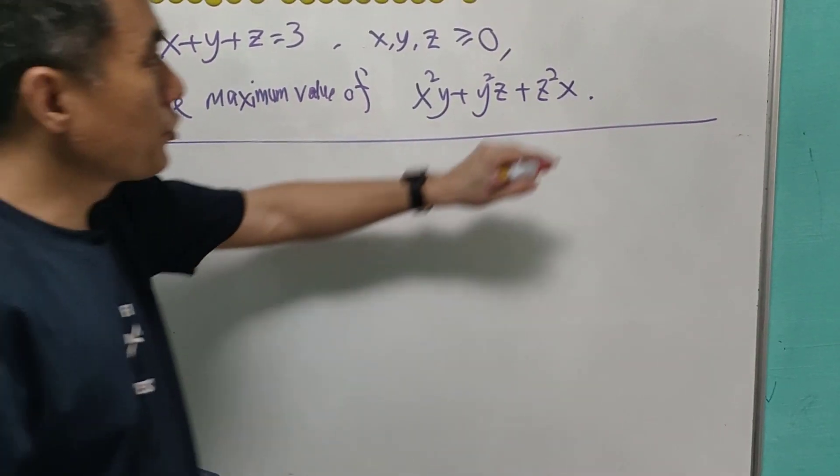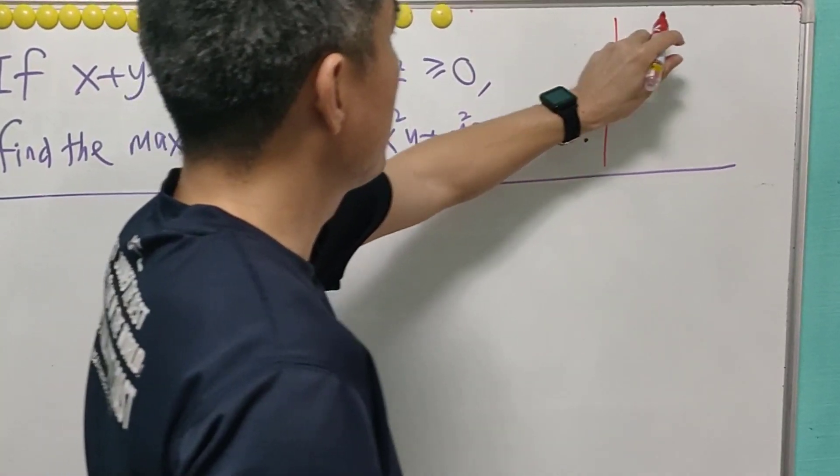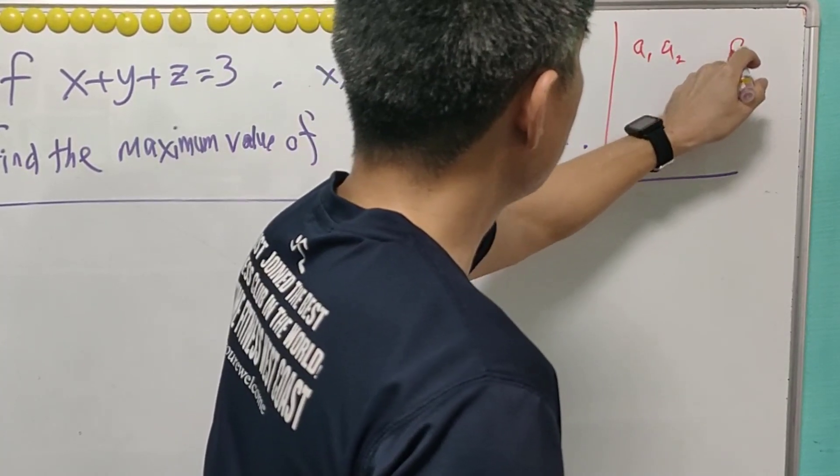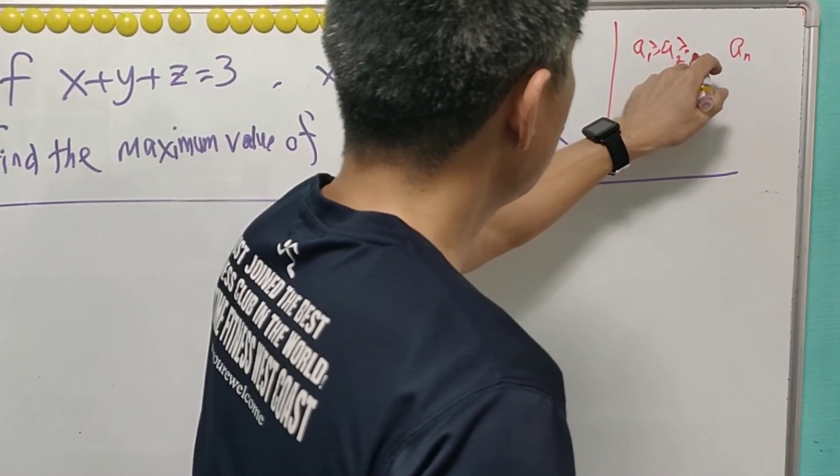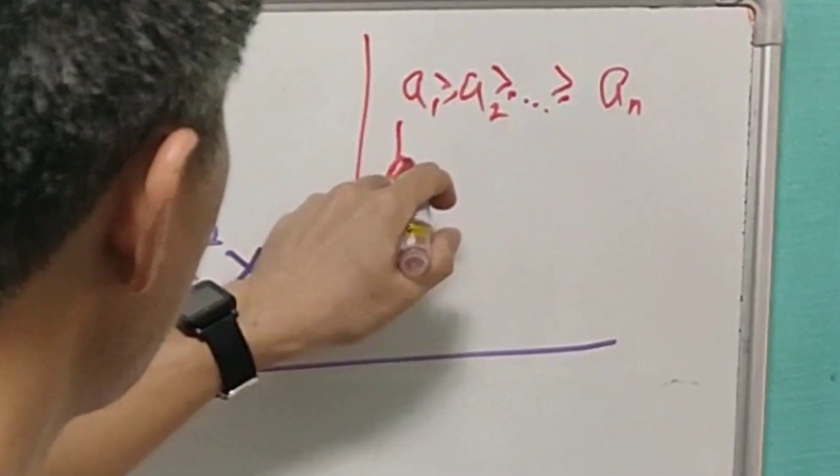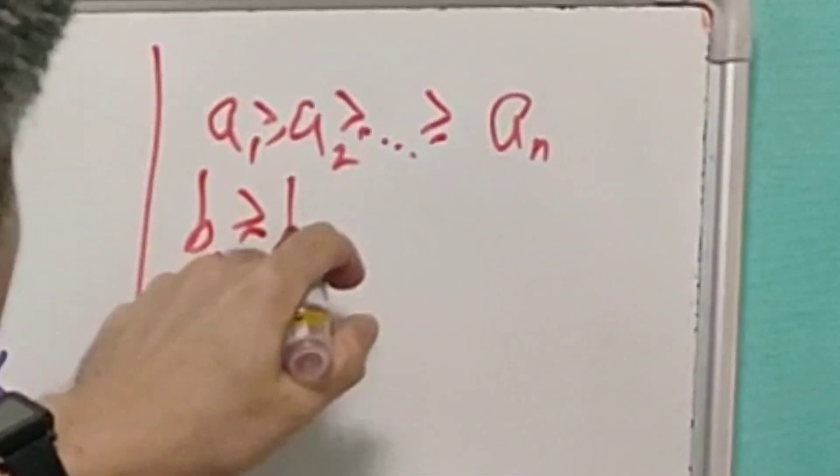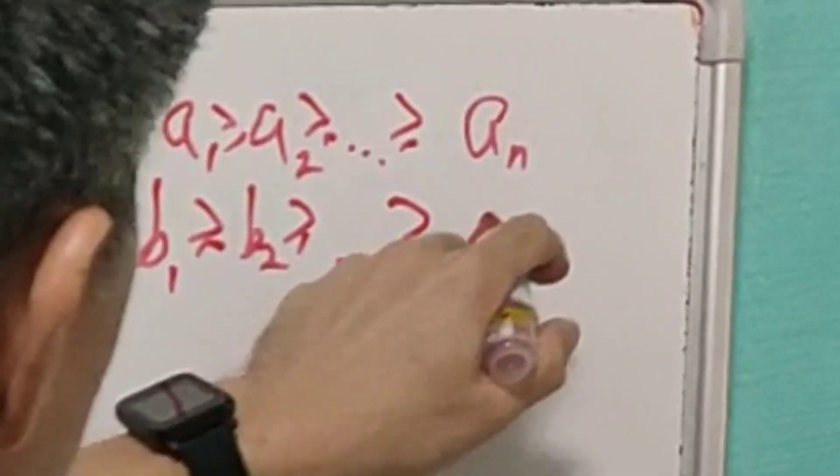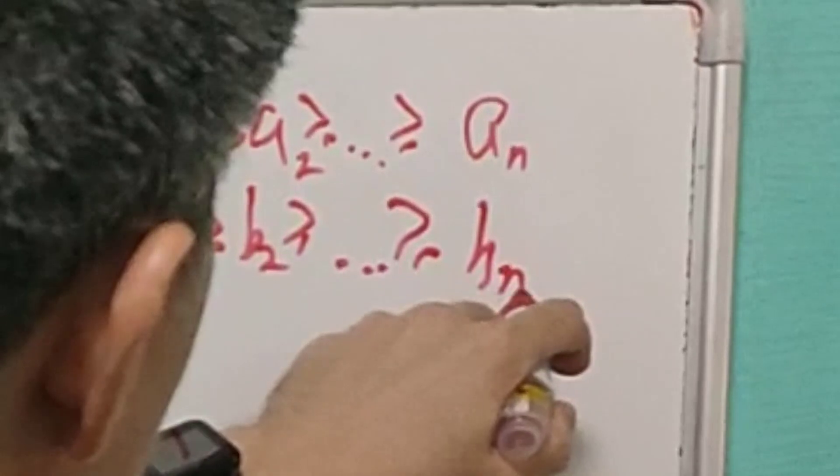So recall for the rearrangement inequality. It says that if you have two sets of a number, A1, A2, all the way to AN, where A1 is greater than A2, greater than equals to AN. Likewise for B1, greater than equals to B2, greater than equals to, all the way to, BN. Okay?